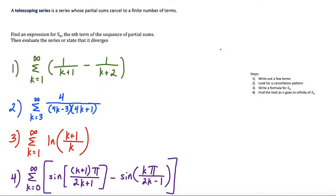My name is Vincent and today I want to show you how to evaluate a telescoping series, which is a series whose partial sums cancel to a finite number of terms. The task for these four questions is to find an expression S(n), which represents the nth term of a sequence of partial sums, and then based on that we want to evaluate the series or state that the series diverges.